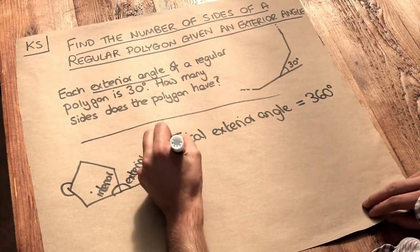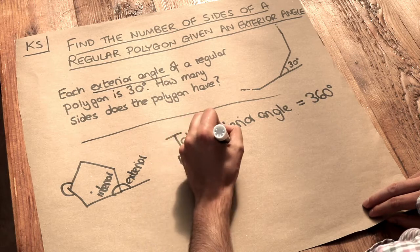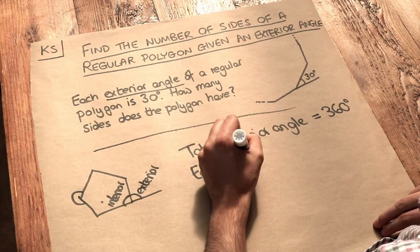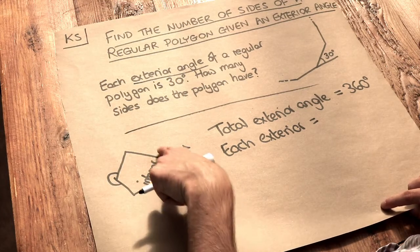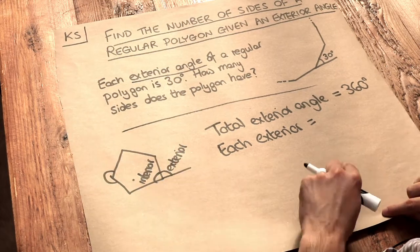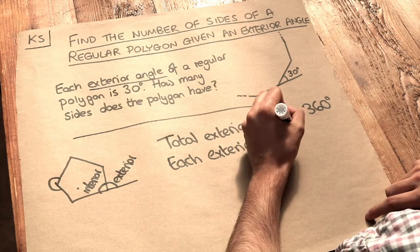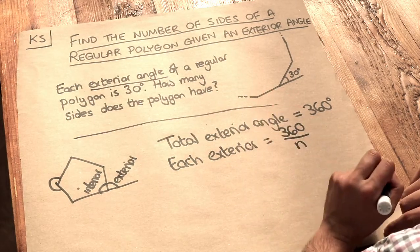And that means if we want to find each exterior angle of a regular polygon, well, because this has five sides and we'll have five exterior angles at each of the corners, then we do 360 divided by the number of sides.